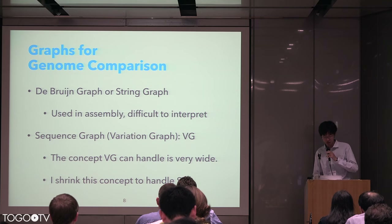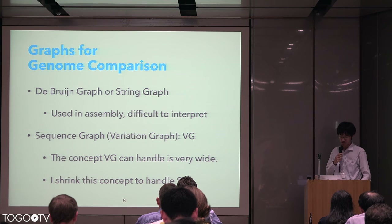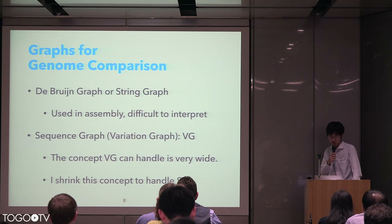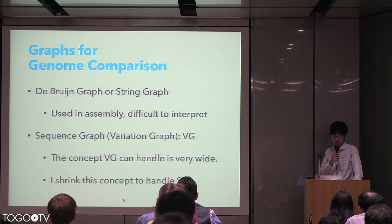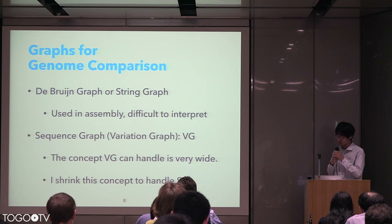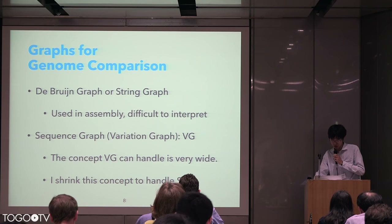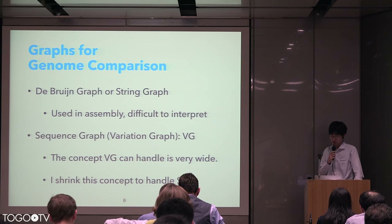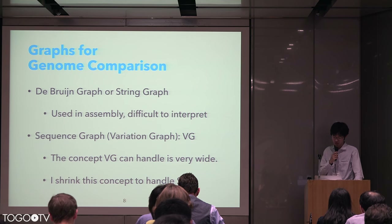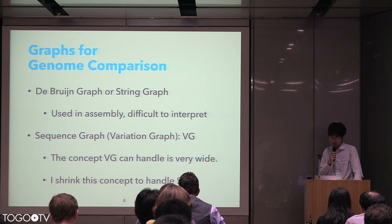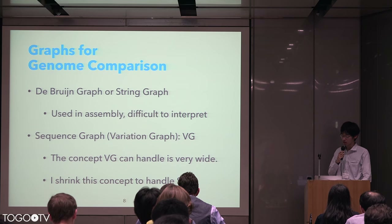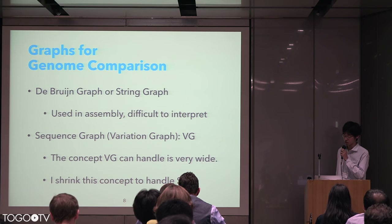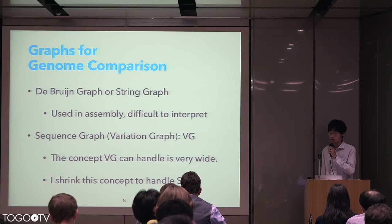Now, let me talk about the graph data structure to represent structural variations. The de Bruijn graph is often used in genome assembly, but these graph structures are difficult to interpret for variation analysis. In variation analysis, the graph called sequence graph or variation graph is used, and VG is the tool to manipulate variation graphs. VG includes not only the variation graph data structure, but also alignment, genotyping, and balanced indexing methods. I select the concept of variation graph to focus on structural variation in human genome composition. I call it a layout graph.